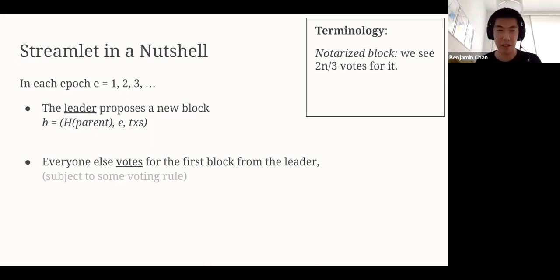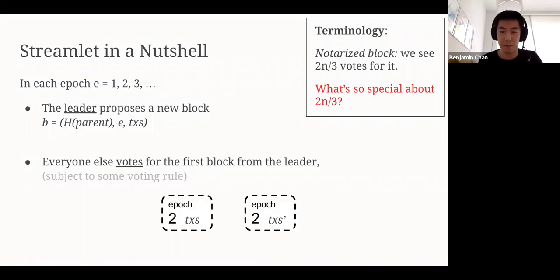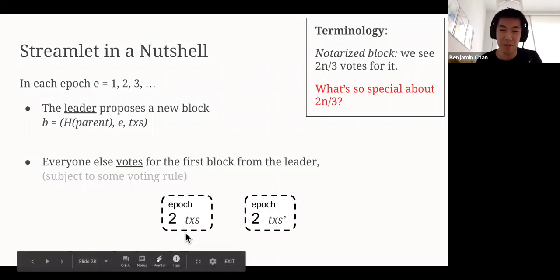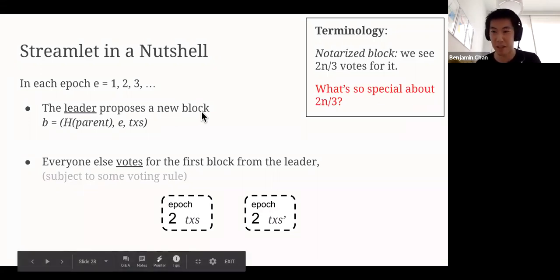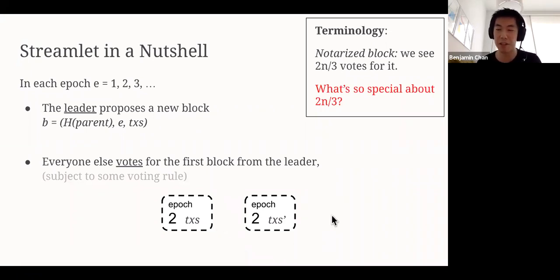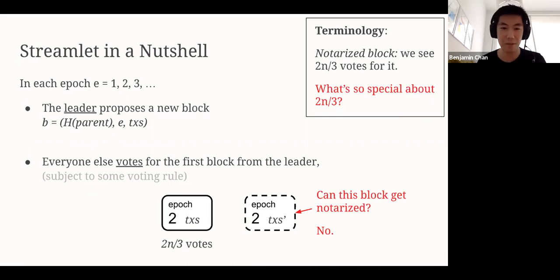Now, to proceed, we have to introduce some terminology. A notarized block is a block for which we see two n over three votes. Once two-thirds of the network has voted for a block, and once we've seen those votes, then we deem that block notarized. What's so special about two n over three? Because of the following observation makes two n over three special. Let's say that we have two block proposals denoted by these dashed lines. Say that the epoch two leader was malicious, so it in fact proposed two different blocks to different people. Note that an honest leader only proposes a single block. We have the left block and the right block with different transaction sets. Let's say that the left block got notarized, denoted by a solid line. So, we see two n over three votes for the block on the left. Then the question becomes, can the block on the right get notarized? The answer is no.